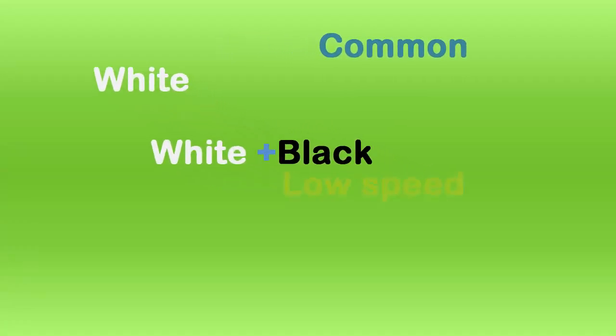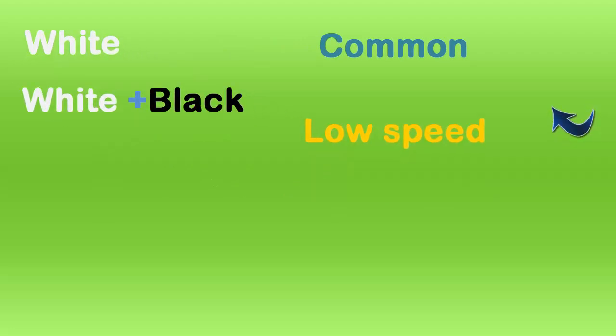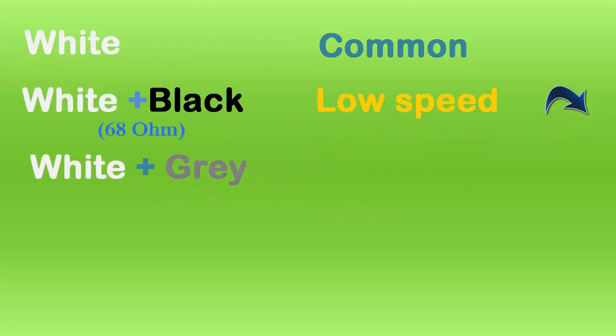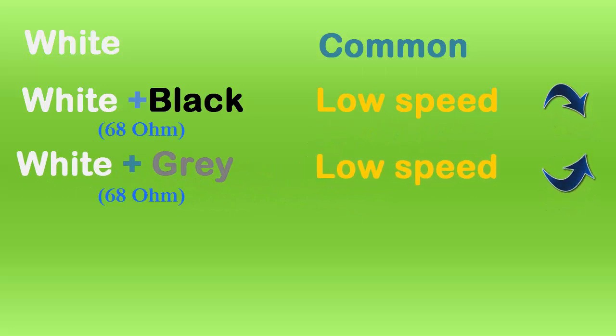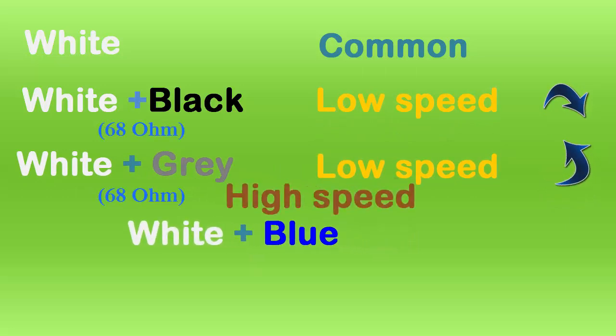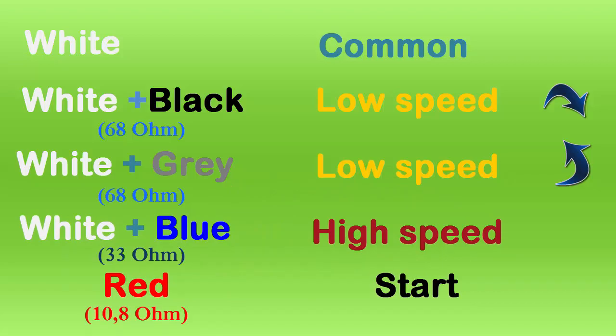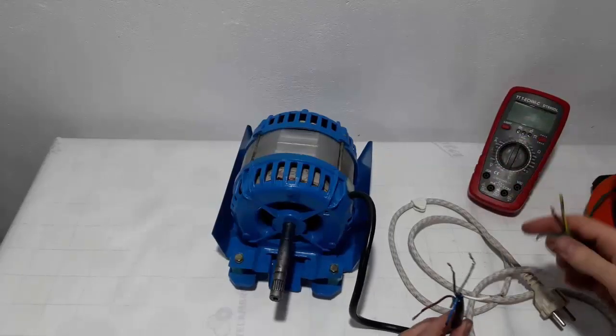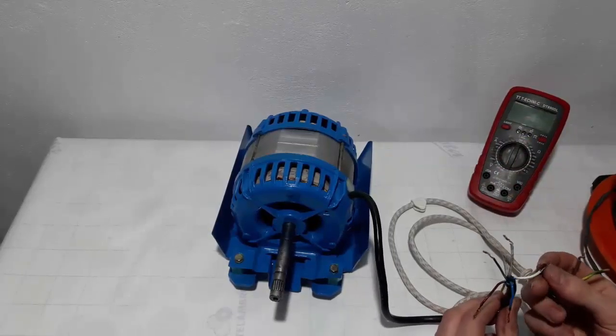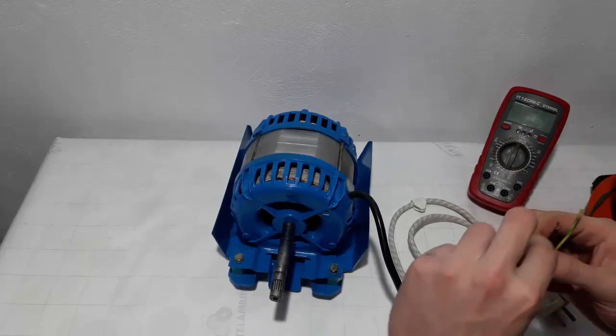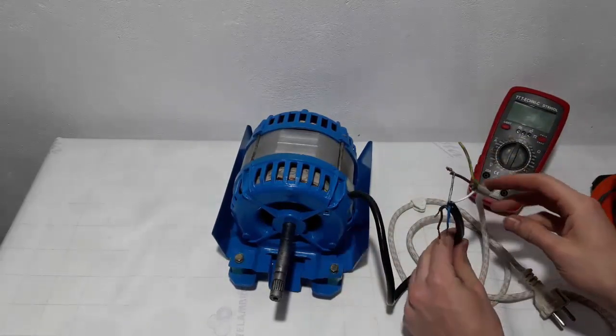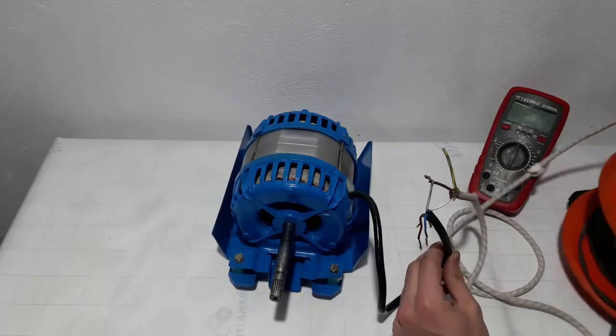So the white is the common. White and black for the low speed. White and gray for the low speed but for the opposite direction. White and blue for the high speed, and the red one is for start. Now we will connect the engine according to the colors which is determined. Connecting the white and gray one for the low speed.